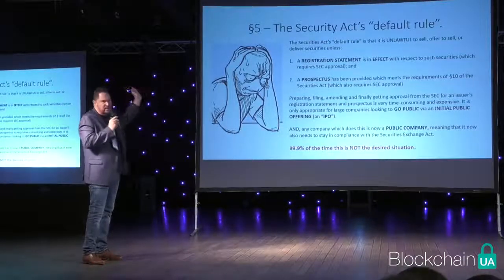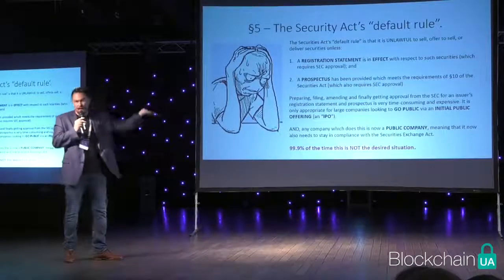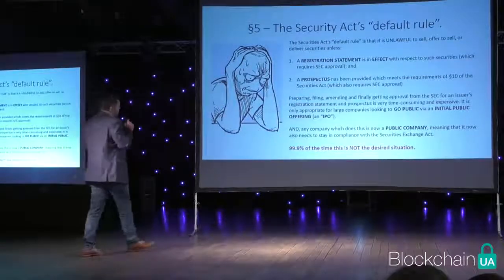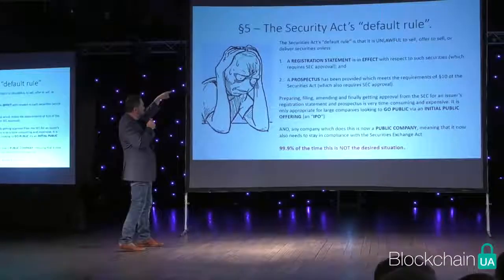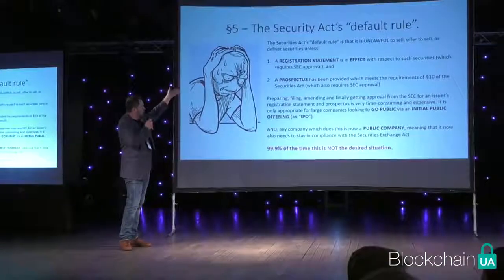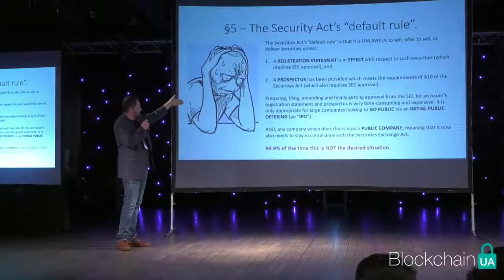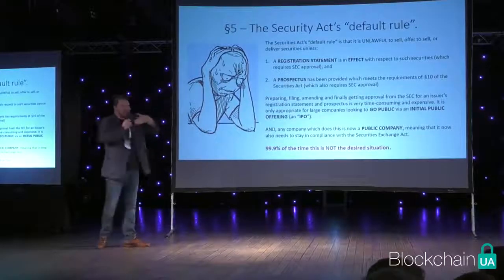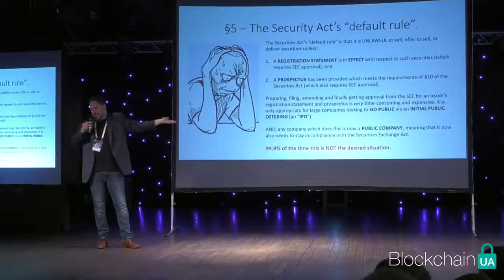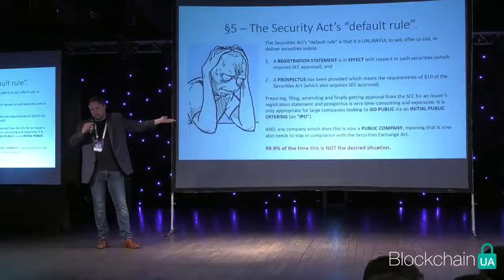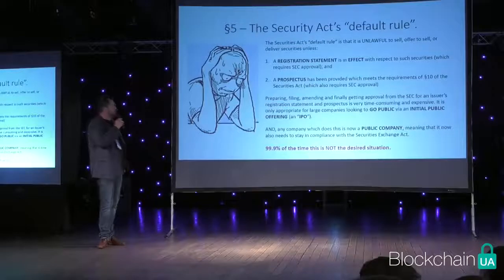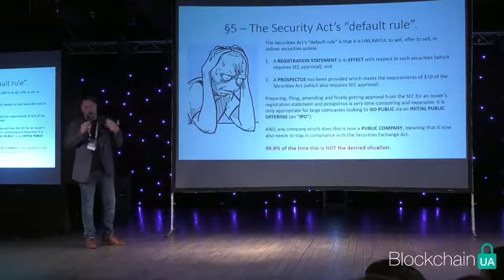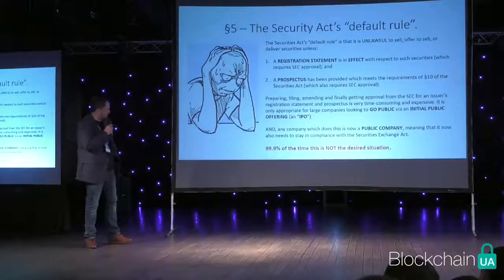When you file and get approval for a registration statement and a prospectus, and then sell your stock to everyone, that's called going public — an initial public offering, or IPO. Most of the time you don't want to do that. You want to do what's called a private sale or private placement. But that's the default rule.